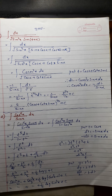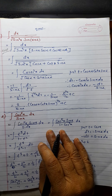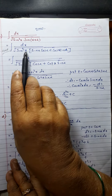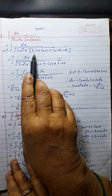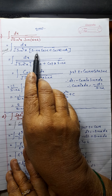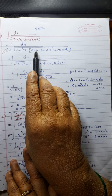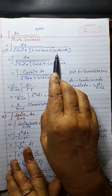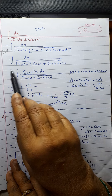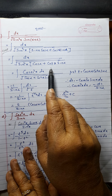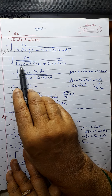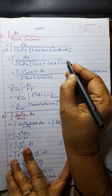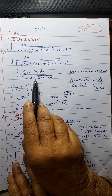This is also a very important problem — this step is important and you should remember it. The problem is integration of dx divided by root of sin cube x times sin of x plus alpha. I will expand sin of x plus alpha using the formula sin a cos b plus cos a sin b. I will take sin x common from here. If I take sin x, it will become sin raised to 4x. So only cos alpha will remain there, plus cos x upon sin x, which is cot x, and then sin alpha.